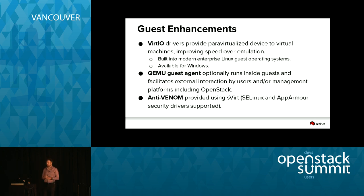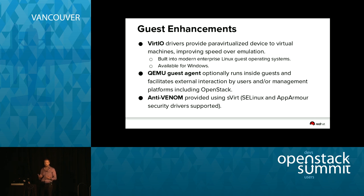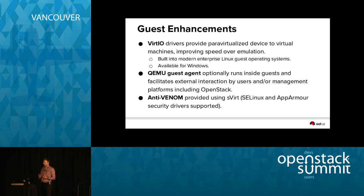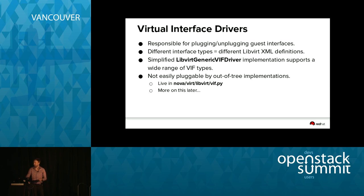On the topic of VENOM — topical given the security advisory last week around QEMU in both KVM and Xen environments — there was mitigation using sVirt. sVirt is a framework for defining a policy for what the QEMU process is allowed to see; if it tries to access something not on that list it gets denied. Although it was originally a Red Hat project, sVirt was always designed with multiple security backends in mind — it works with AppArmor as well as SELinux. Your distribution should enable this by default; if you're disabling it for some reason, probably don't do that.